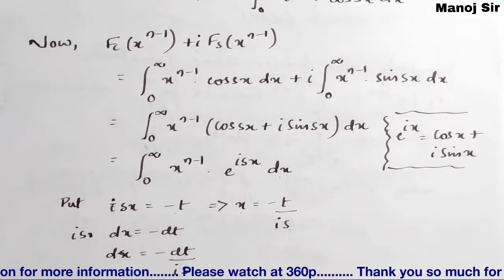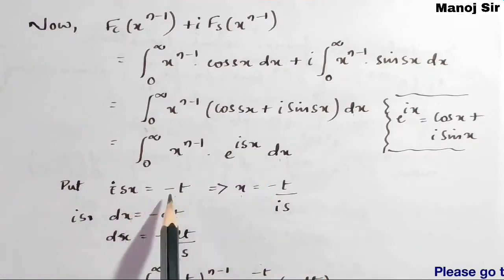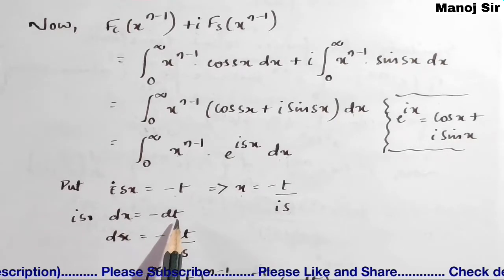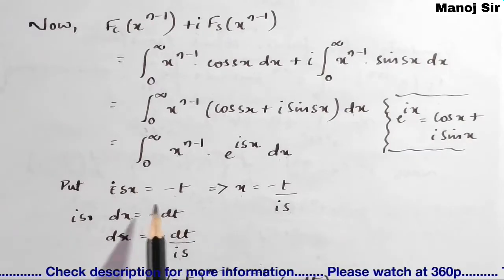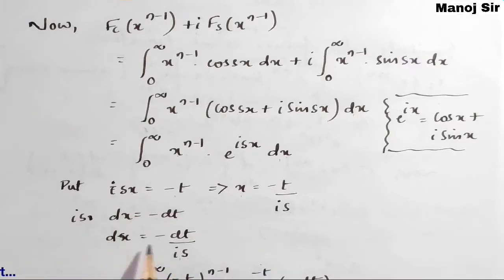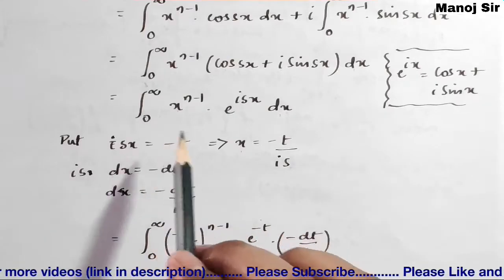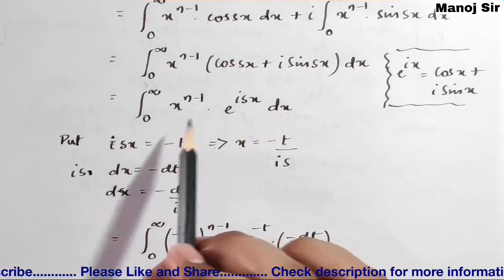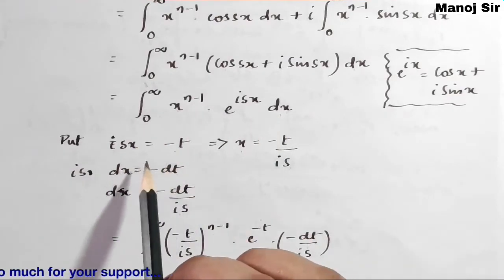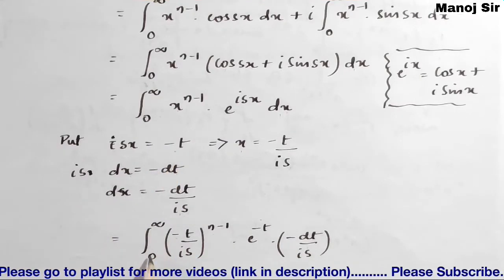We cannot solve this integration directly, so we substitute isx = −t. Differentiating, we get is·dx = −dt, so dx = −dt/(is). From the substitution, x = −t/(is). Since the limits for x are 0 to infinity, after substitution the limits for t remain 0 to infinity.